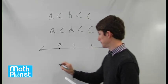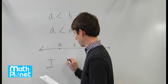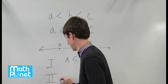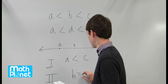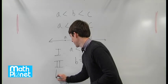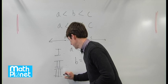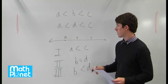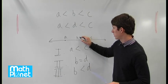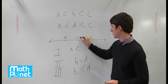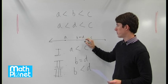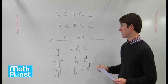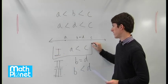So our options are: A is less than C, B is equal to D, and B is less than D. But since our number line will look the same with B and D, we don't know where B and D are relative to each other, but we do know that A is always less than C. So this is the only thing we know definitively.